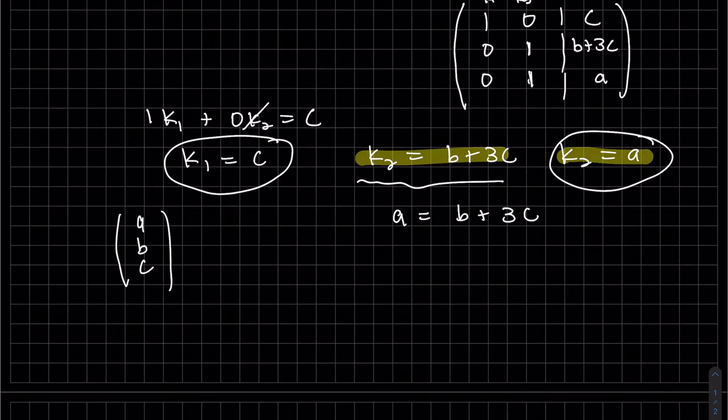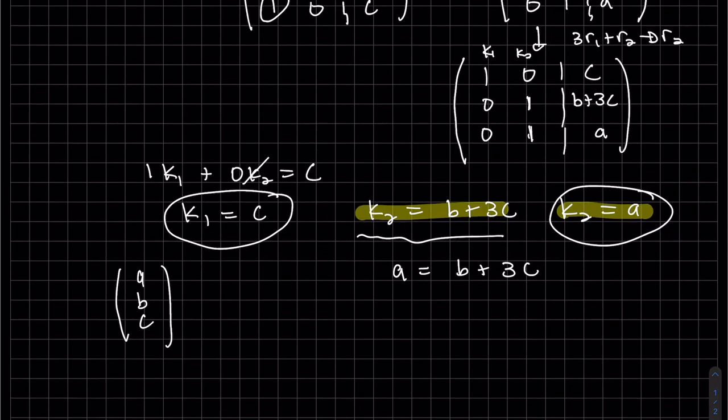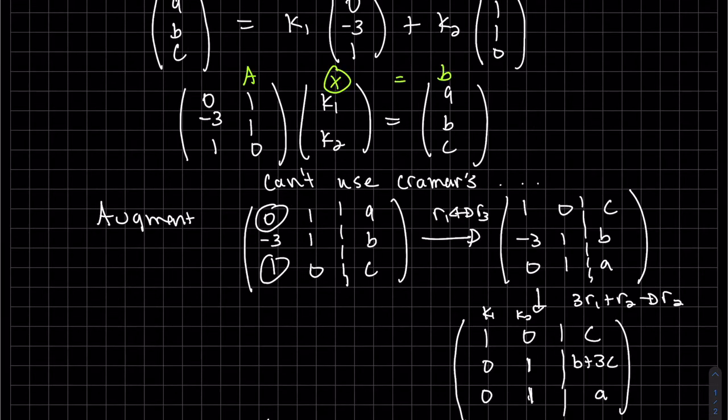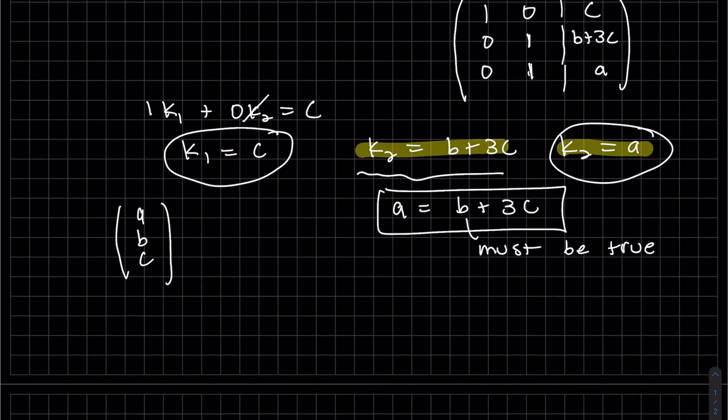If I pick any vector a, b, c, we get a solution to this system if this relationship holds. This must be true to satisfy our system. Basically, since we have that a, b, and c depend on each other, it does not span P2.